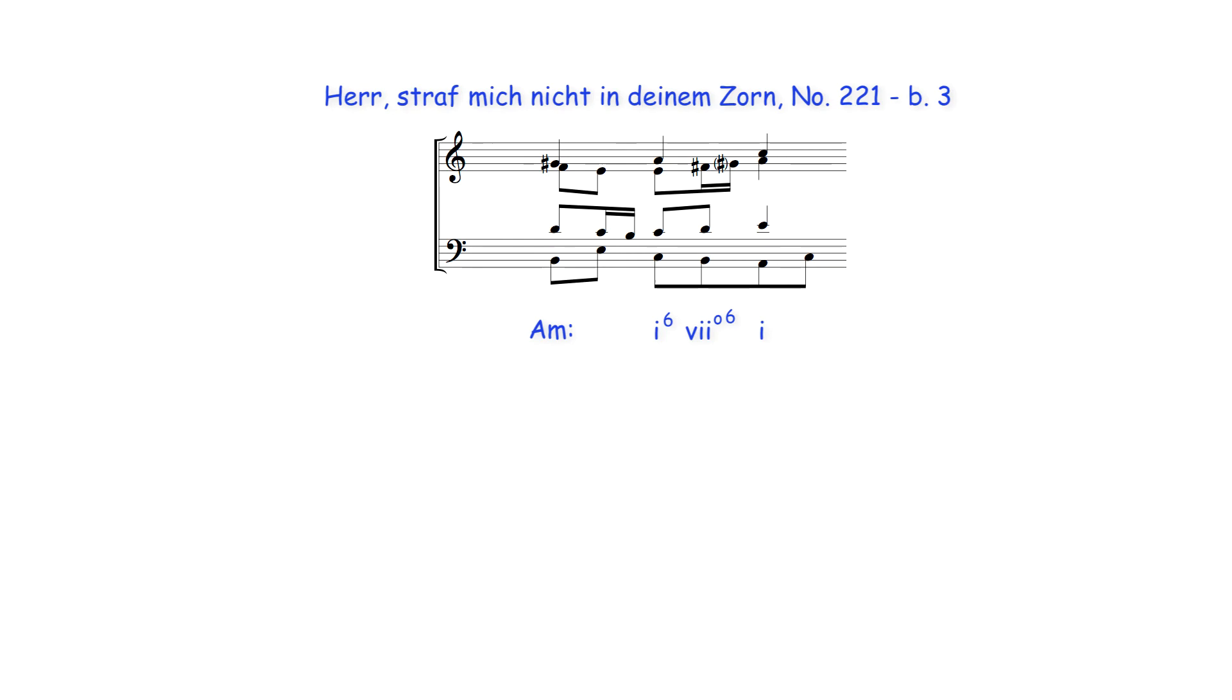Here also, an A minor chord is prolonged by its leading note diminished chord, which in the alto part includes A minor's raised sixth and seventh degrees, taken as sixteenth notes. Here again, only three of the four parts contain chord notes of the prolonging chord, while the soprano sounds A minor's root note.